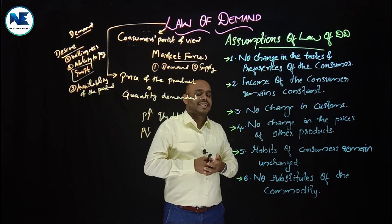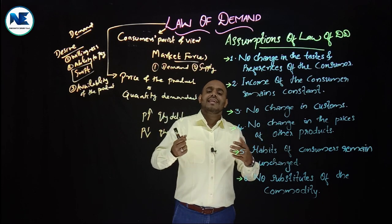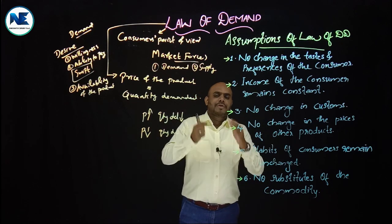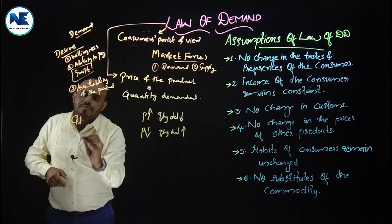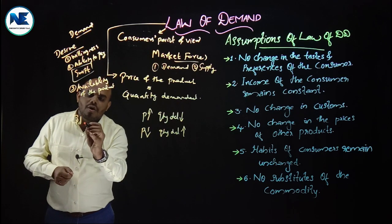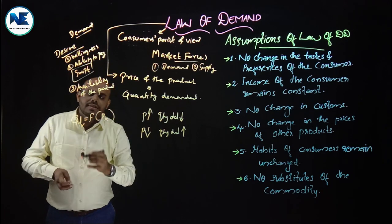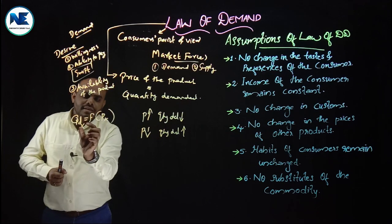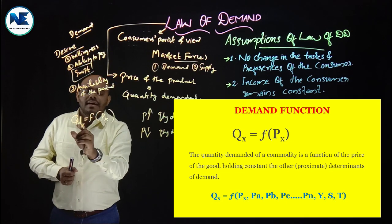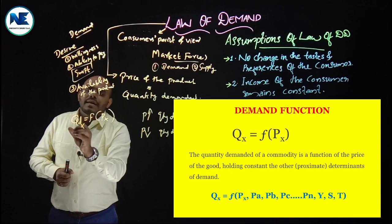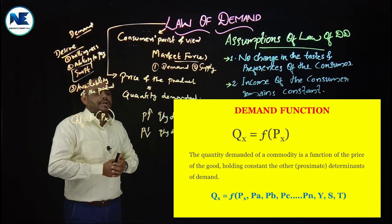Assumptions of the law of demand. In microeconomics, we consider a number of assumptions. We can state a demand function: quantity demanded of product X is a function of the price of X. This is the demand function — quantity demanded is the dependent variable and price is the independent variable.